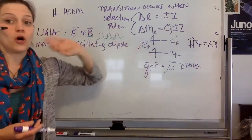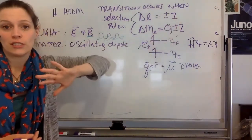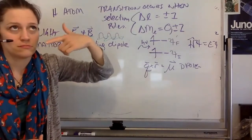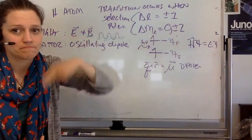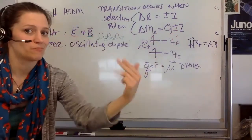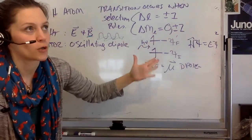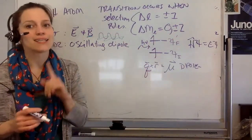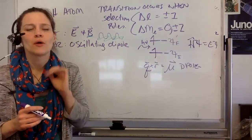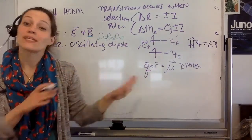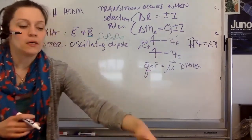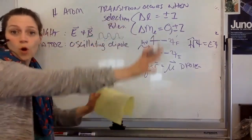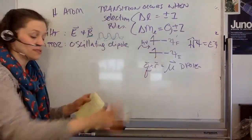This is true if it's IR, Raman, UV-Vis, microwave, Mossbauer — all of those. NMR is different, it's resonance. Scattering is still the same. This is where scattering and absorption are the same — only here, not anywhere else.